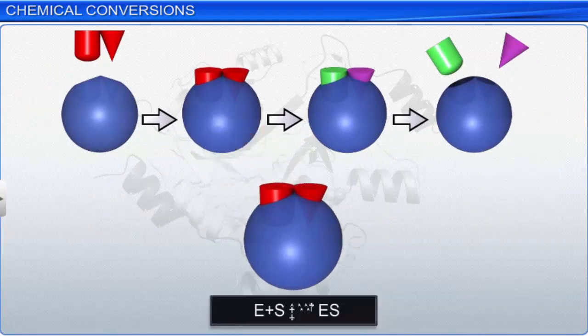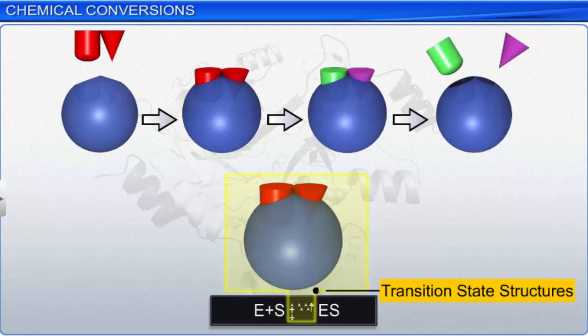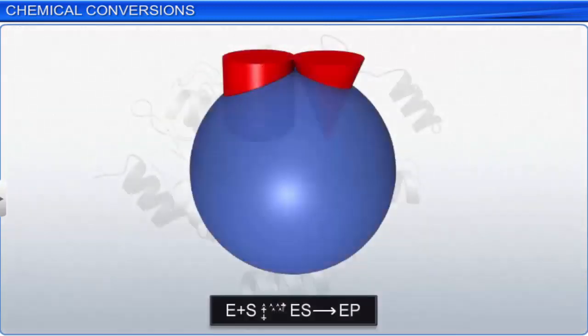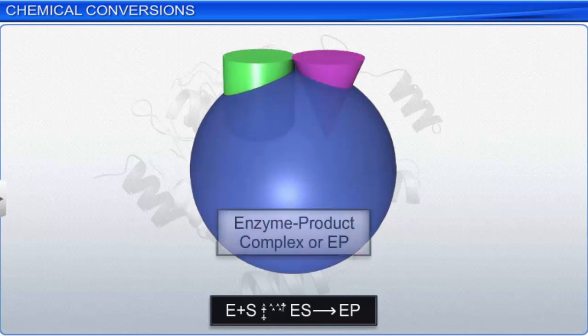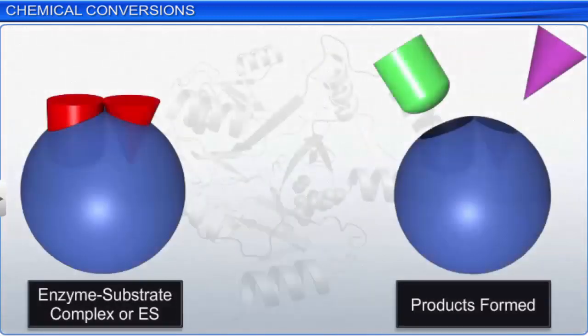This complex is short-lived, due to its instability, but it is extremely important for catalysis. These temporarily formed complexes are also known as transition state structures. In the third step, the active site of the enzyme breaks or forms chemical bonds, and a new enzyme product complex, or EP complex, is formed. This EP complex is also unstable. Finally, in the fourth step, the structure of the substrate is transformed into the structure of the products.